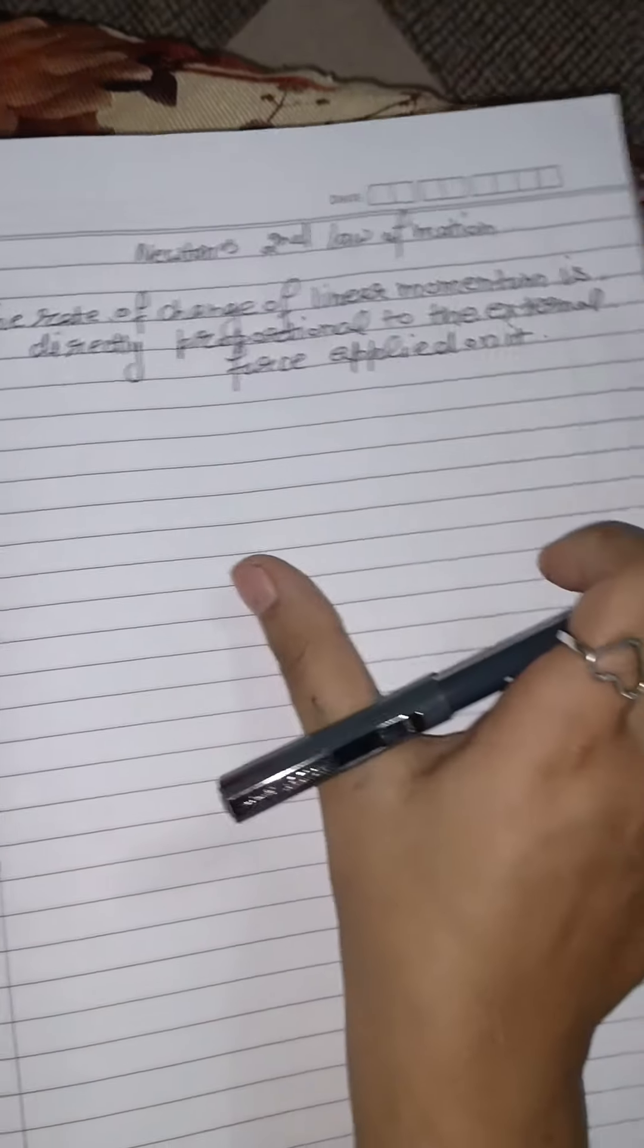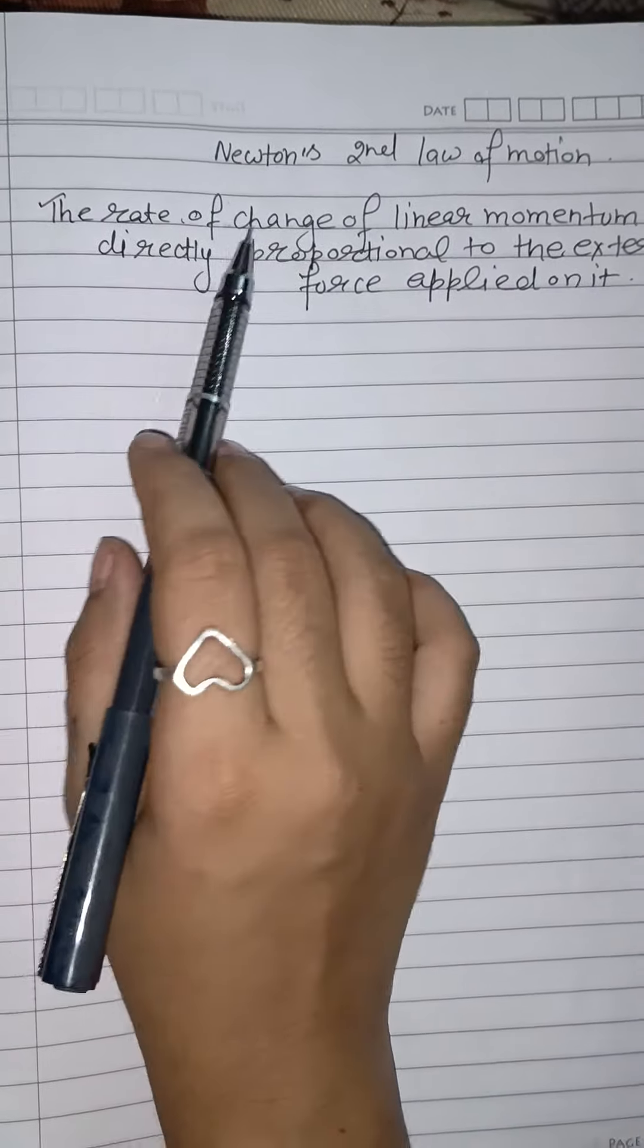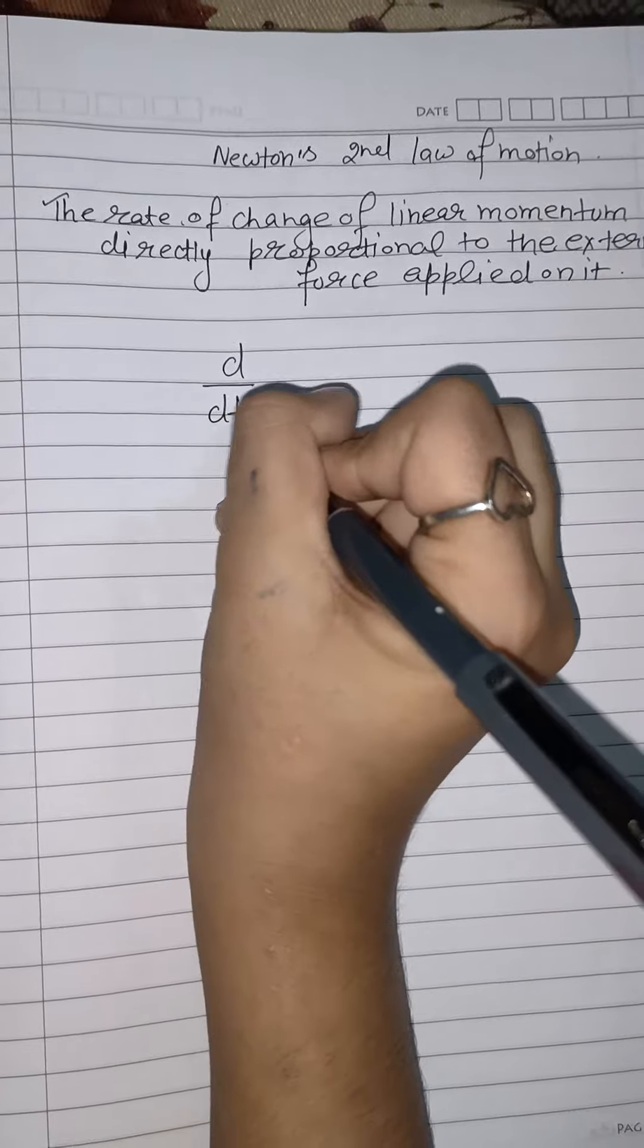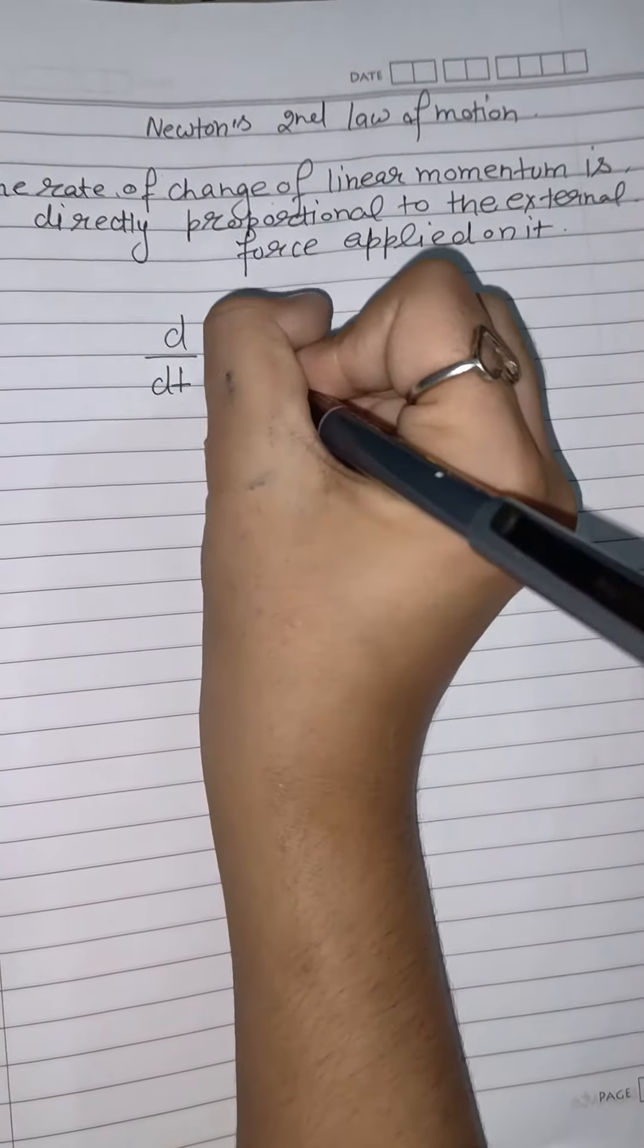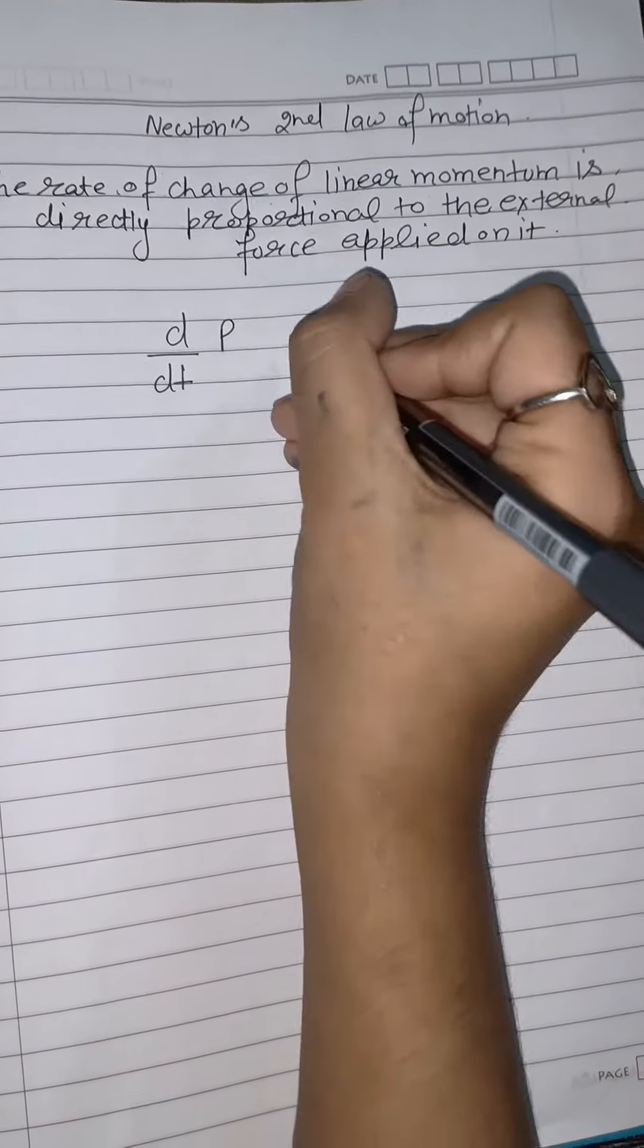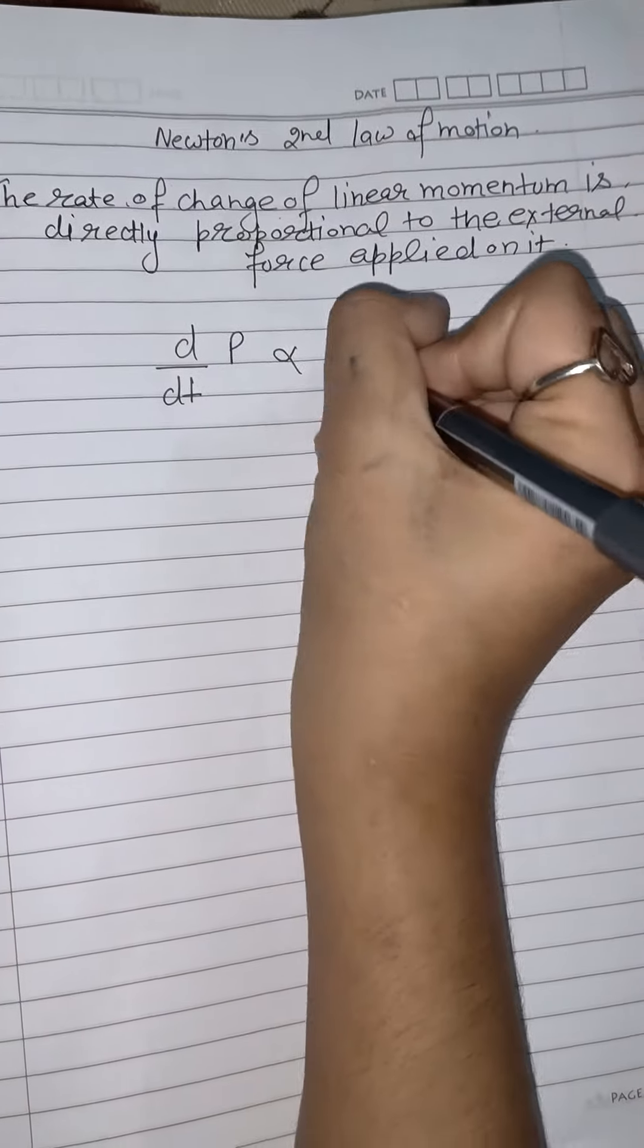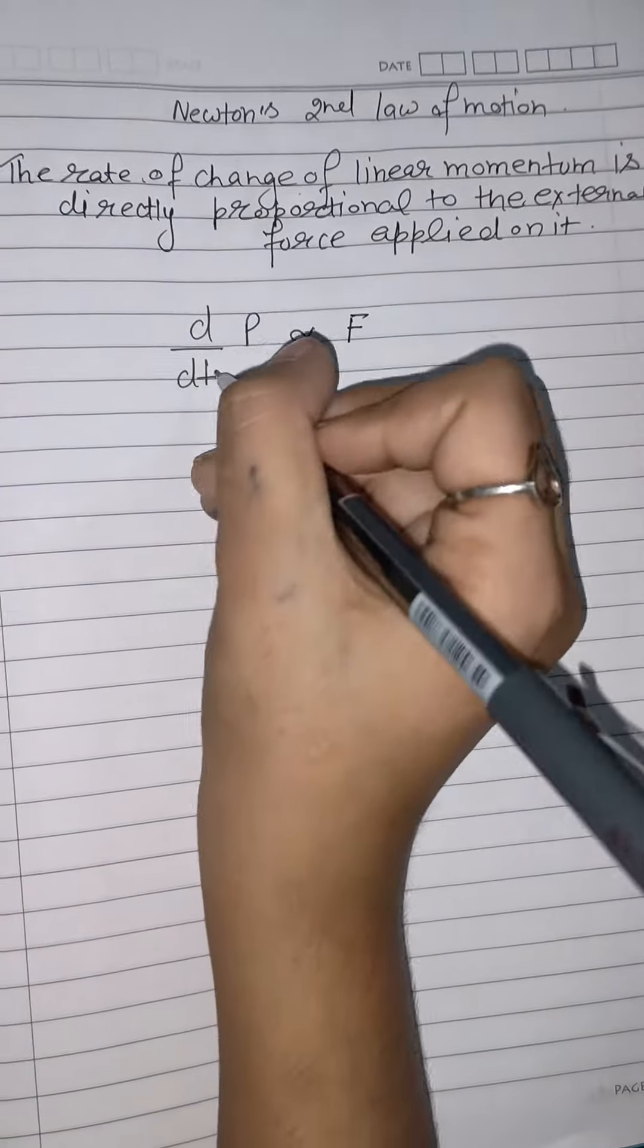So what do we have to derive the expression of this statement? The rate of change we have to represent d by dt, which is the linear momentum. What is the linear momentum? P is directly proportional to the external force applied on it. Meaning that the force externally applied on it is directly proportional.